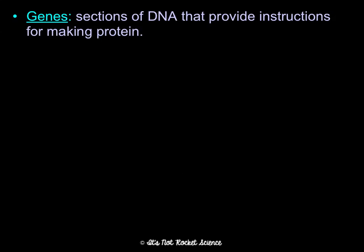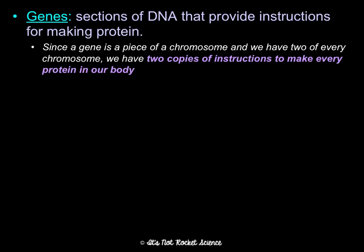Genes are sections of DNA that provide instructions for making proteins, and proteins are what are expressed as your traits. Since a gene is a piece of a chromosome, and we have two of every chromosome, you have two copies of instructions to make every protein in your body. Those two copies work together in order to determine what protein is going to be made and expressed.